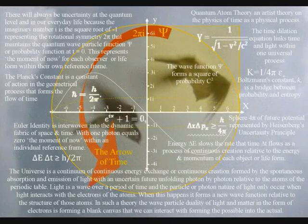There will always be the uncertainty or probability at the quantum level, and in our everyday life, because the imaginary number i is the square root of minus one, representing the rotational symmetry, 2pi, that maintains the quantum wave particle function, or probability function, at t equals zero.